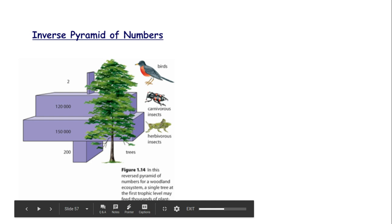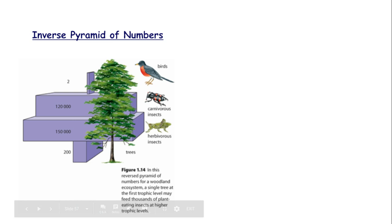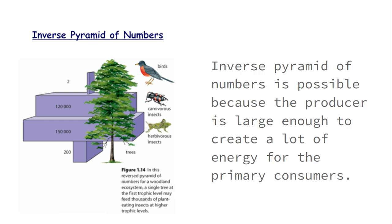A pyramid of numbers can also be looked at as what we call an inverse pyramid of numbers. The reason is that sometimes an ecosystem is supported by plants like trees, and trees are really, really big. You're not going to have thousands and millions of trees in one ecosystem — you'll have a few because they're so big that so many things can live in them. Inverse pyramids are possible because producers are large enough to create enough energy for our primary consumers.